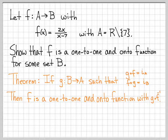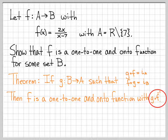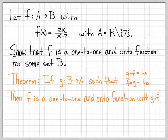So if we can construct a function g with these properties, then we know that f is one-to-one and onto. Not only that, we also know that g is the inverse function of f. So this actually provides us a little bit more information than just showing it's one-to-one and onto — it tells us what the inverse function of f is.